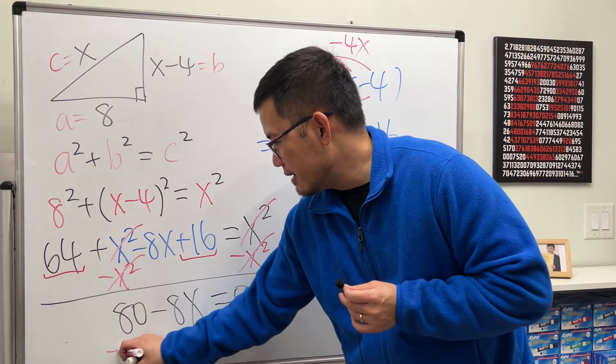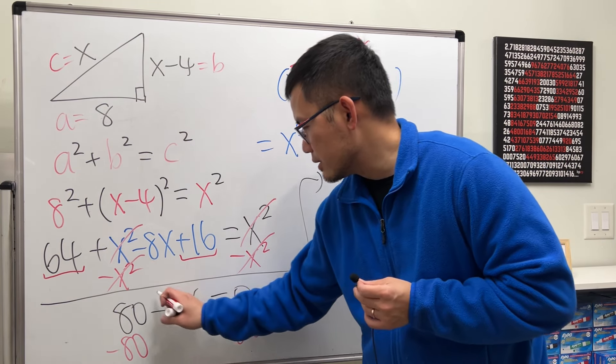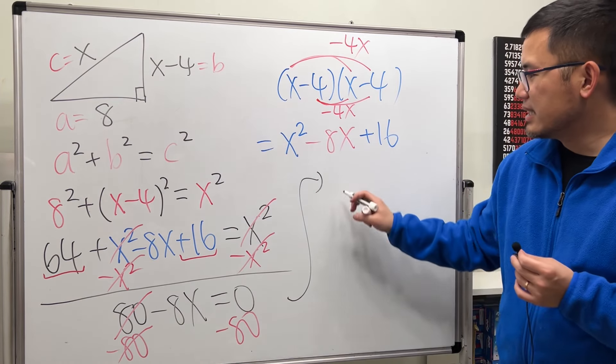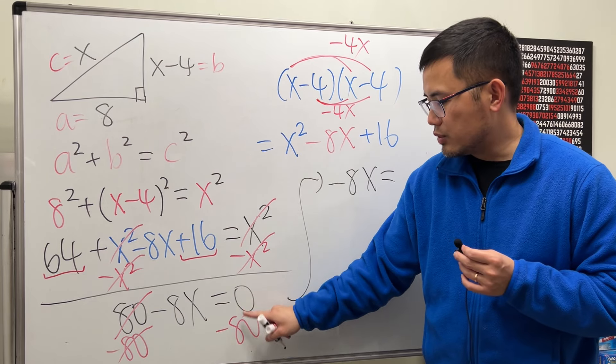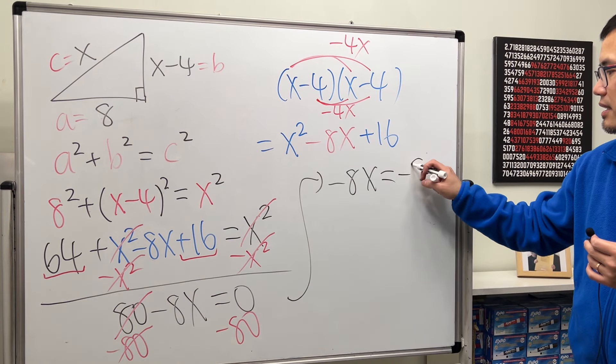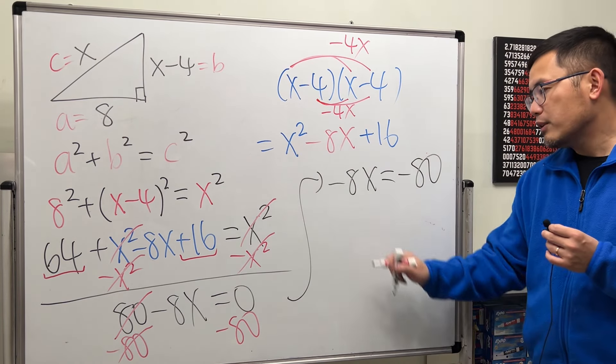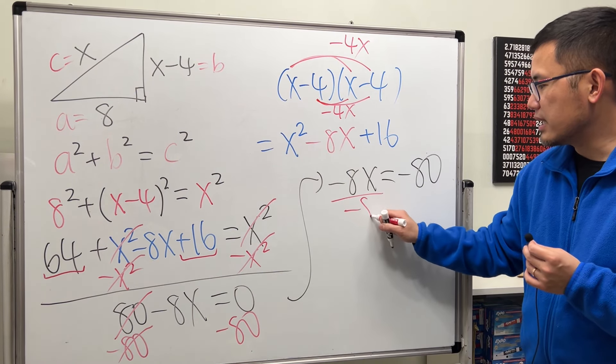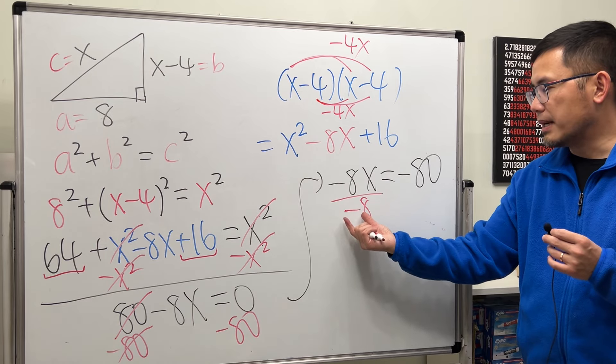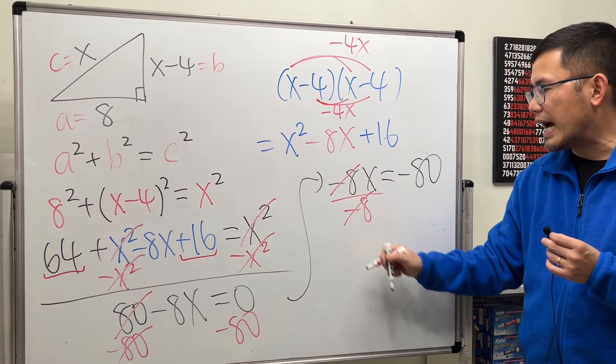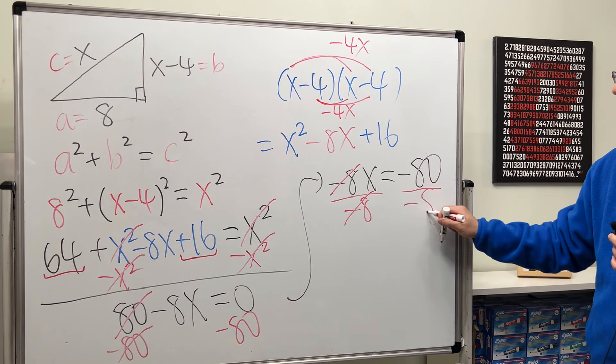So from here, that's minus 80 on both sides. So they cancel. And then we get negative 8x equal. We have 0 minus 80. So that's negative 80. And then finally, just divide both sides by negative 8. Because this is negative 8 times x. So divided by negative 8 right here. So that we can cancel this and that. And do the same thing on the other side.